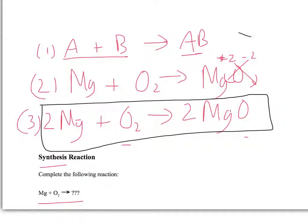So again, number one: write out the general formula. Number two: complete the formula with the oxidation states. And step three: crisscross, reduce, and balance.